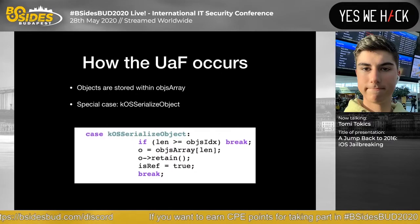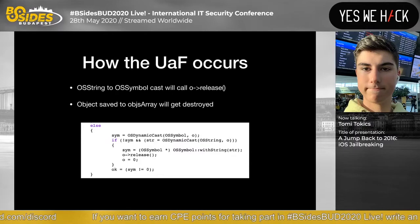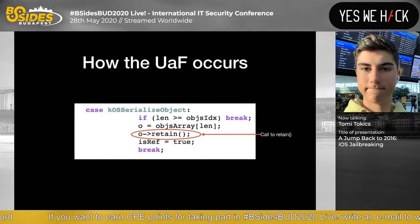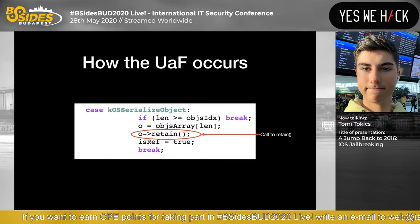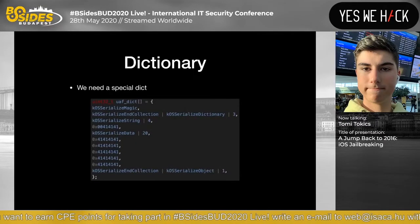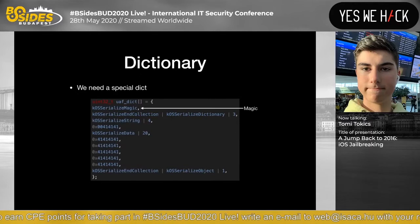What happens is there's an OSString cast to a single cost which calls OSRelease, freeing the object that was just saved to the objects array. We can see the over-release call and the call to get the cached object. We can then reallocate that data with custom data and call OSRetain on it — making it a UAF scenario. Again we need to make a special dictionary.